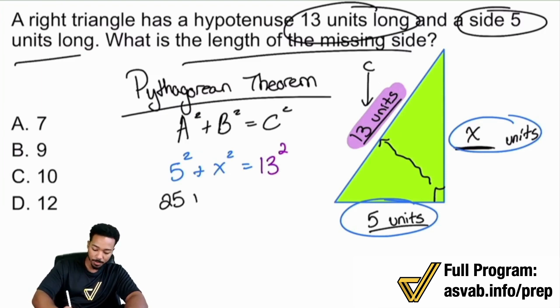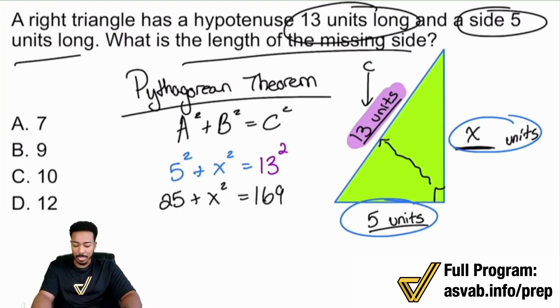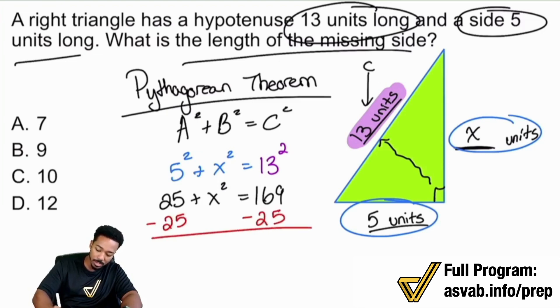5 squared is 25. x squared stays x squared. 13 squared, what is that? 13 squared is going to be 169. So with that, let's go ahead and take care of business now. We want to get the x squared by itself. So the first thing I'll do is I'll subtract 25 from both sides. If I subtract 25 from both sides, goodbye there. x squared equals 144.